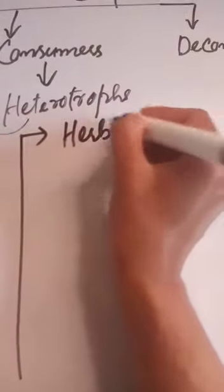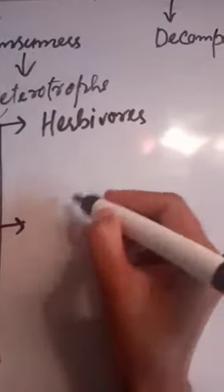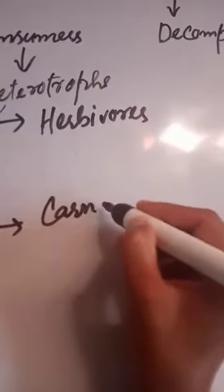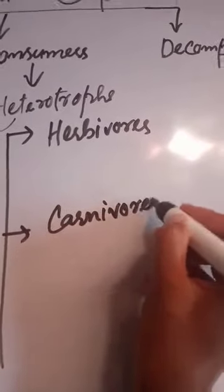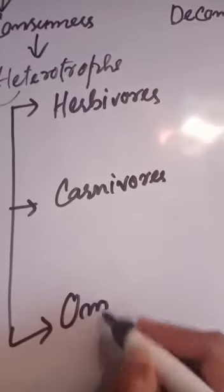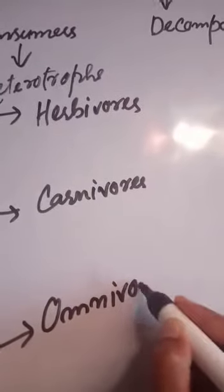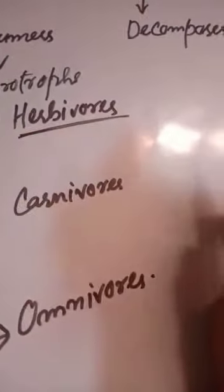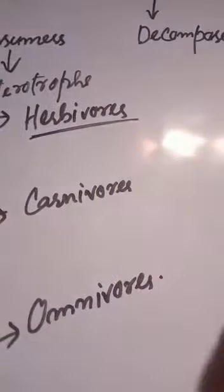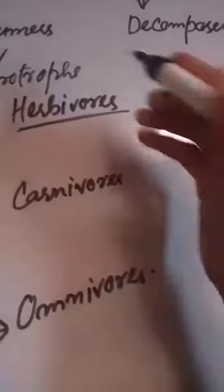Number second, carnivores. Number third, omnivores. Herbivores - these are those organisms or animals which eat plants or plant products. For example, cow, goat, etc. Carnivores - these are those animals which eat flesh only, such as lion, tiger, etc.